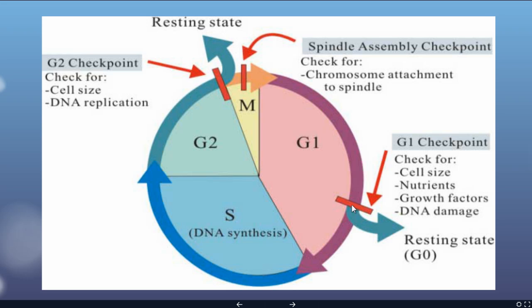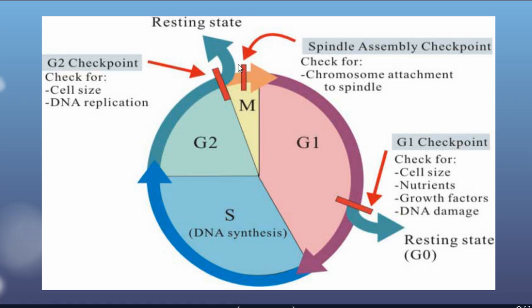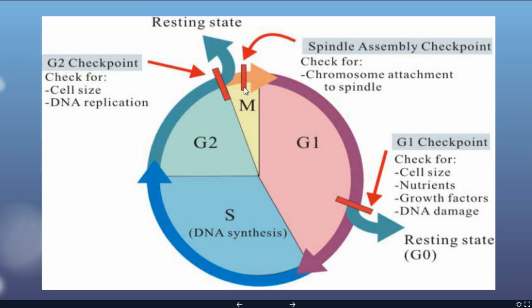If all of these things are okay, the cell will progress to DNA synthesis. The second checkpoint is at the very beginning of mitosis, to make sure the cell is the right size and that DNA replication was successful. The final checkpoint is mid-mitosis, to make sure all chromosomes are attached properly to the spindle before anaphase can actually occur.